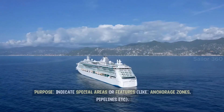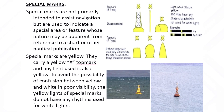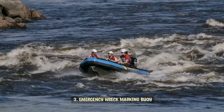Special marks. Purpose: indicate special areas or features, like anchorage zones, pipelines, etc. Features: yellow color. Top mark: single yellow X, if present. Yellow light, if lit, with any rhythm not used by white lights. Trick to remember: yellow for special, like caution signs on land.